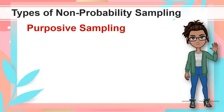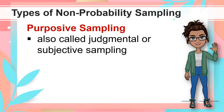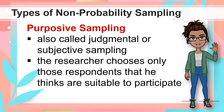The next type of non-probability sampling is Purposive Sampling. This is also called Judgmental or Subjective Sampling. In this method, the researchers choose only those respondents that they think are suitable to participate in the research study.